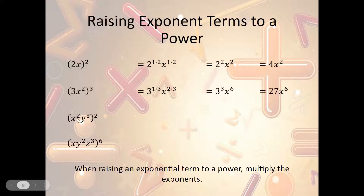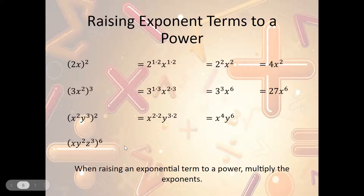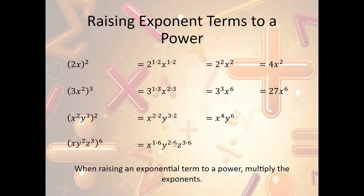For (x²y³)², we multiply each exponent by 2: x² times 2 gives x⁴, and y³ times 2 gives y⁶. So we get x⁴y⁶. For (xy²z³)⁶, we multiply each exponent by 6: x¹ times 6 is x⁶, y² times 6 is y¹², and z³ times 6 is z¹⁸. So we get x⁶y¹²z¹⁸.